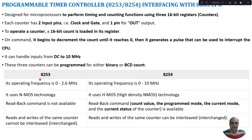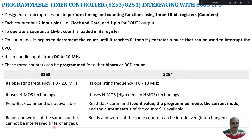In 8253, we don't have a readback command, meaning we cannot read the count value, the current mode of the counter, or the current status. Whereas in 8254, the readback command is available — we can read the count value, programmed mode, current mode, and current status of the counter. Also, in 8253, reads and writes of the same counter cannot be interleaved, whereas in 8254 we can interleave read and write operations on the same counter.